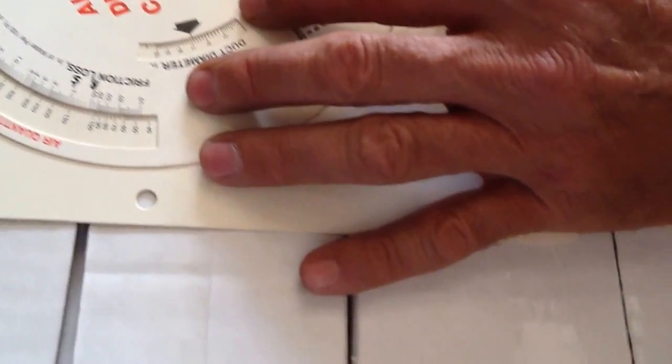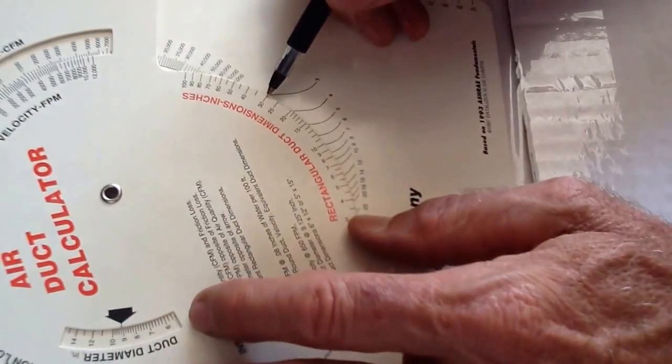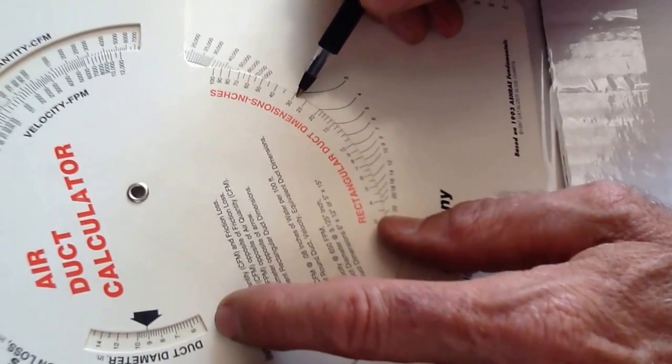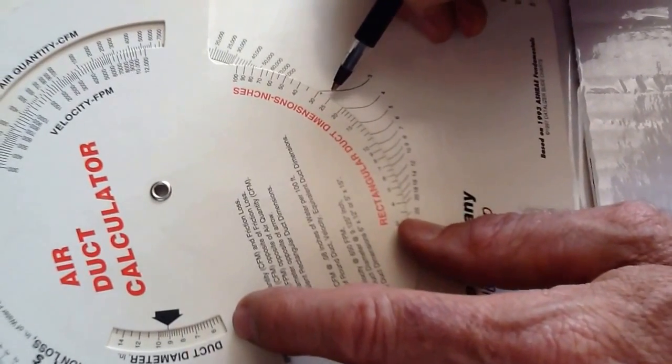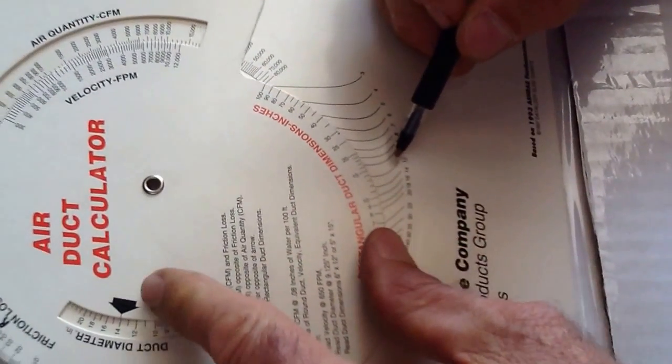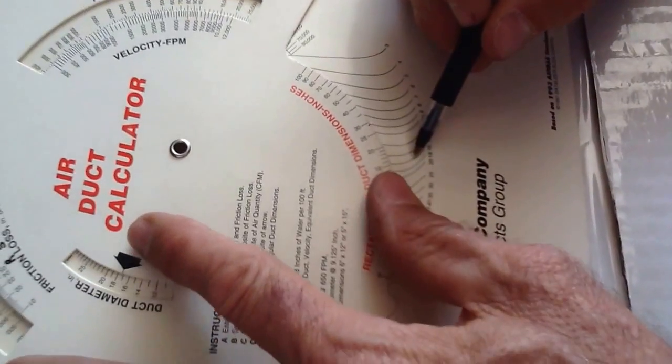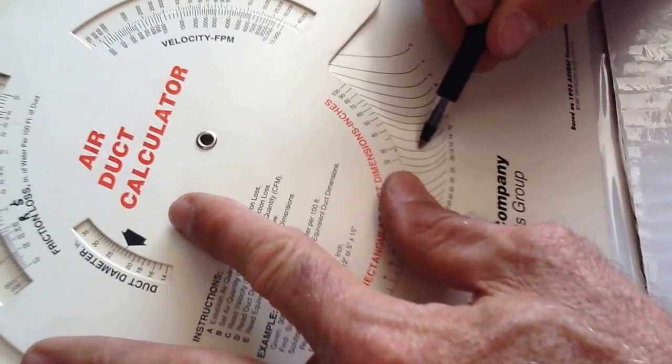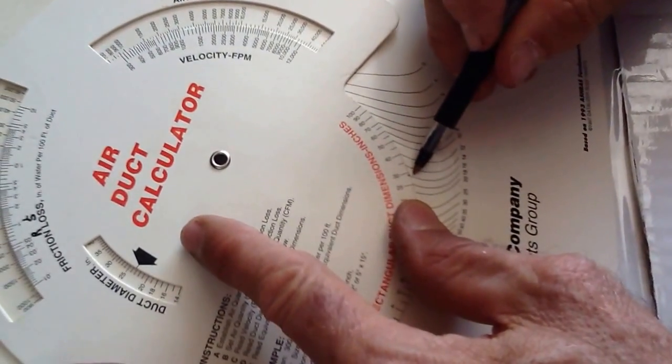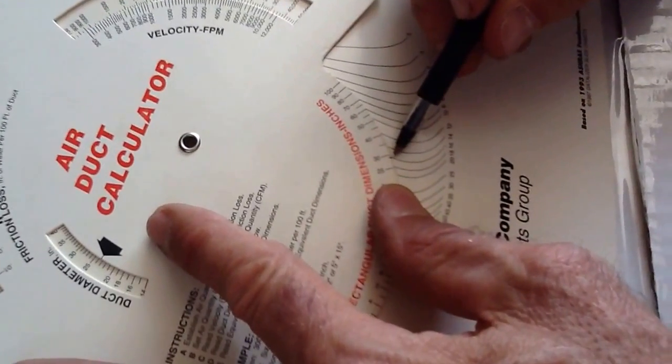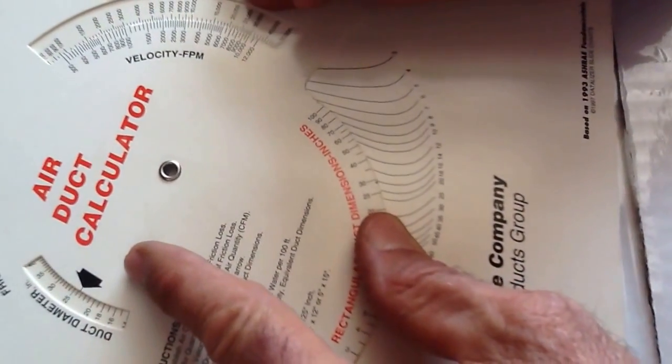I'm going to go to the 29, so 29 is going to be about right here, and I'm going to find the 17. Okay, now here's 29 by 16, and I'm just going to nudge it just a hair above that.